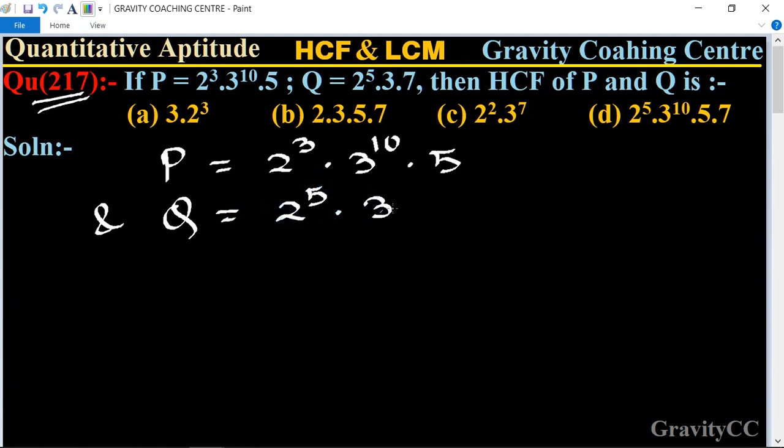Therefore, the HCF of P and Q is equal to, we know that in HCF we can take only the product of least degree of each common factor.